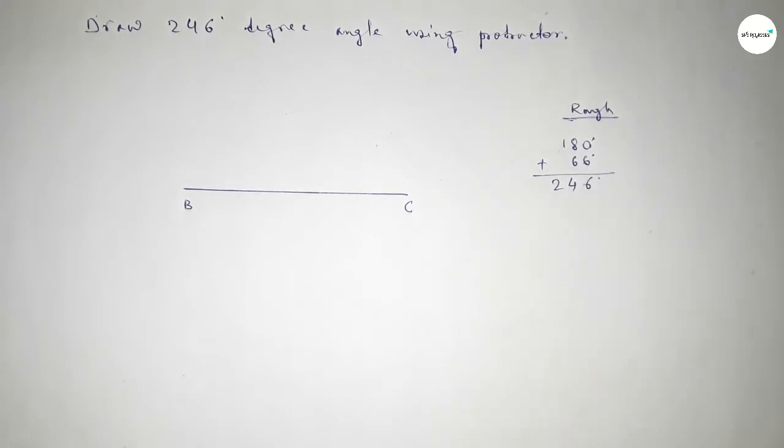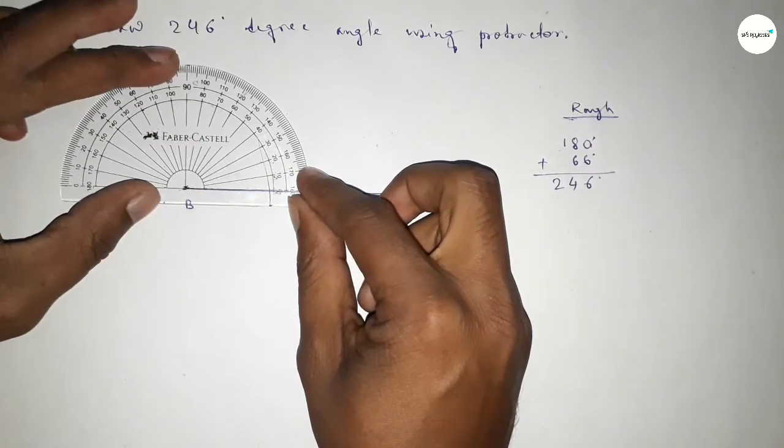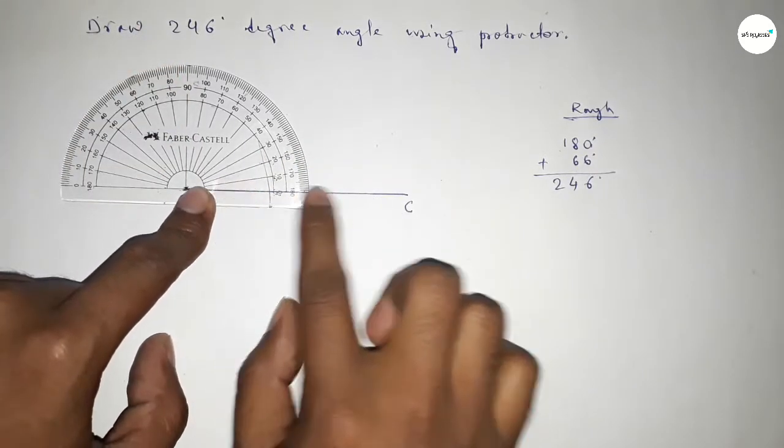First, we have to count a 180-degree angle. So putting the protractor on point B and counting 180 degrees.